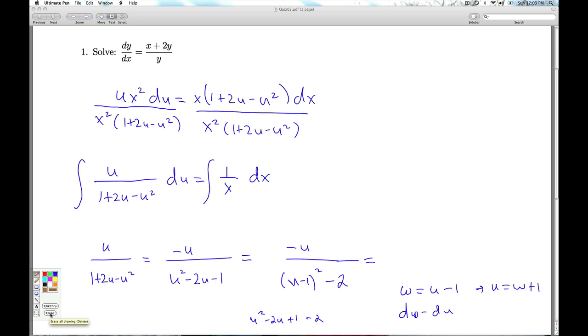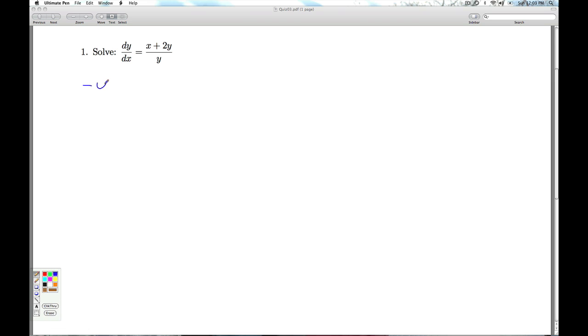So here's the deal. Here's really the whole point of this. In addition to practicing the homogeneous substitution, let's take a look at this again. And let's use the factor theorem to factor u² - 2u - 1 equals 0.